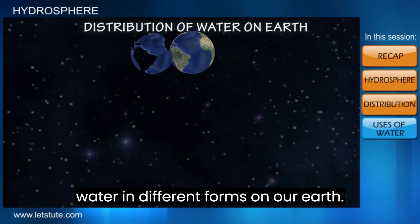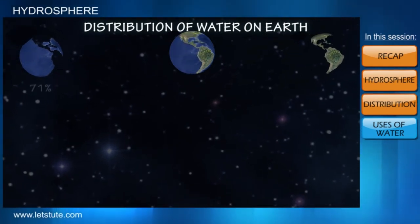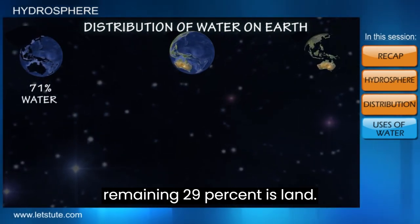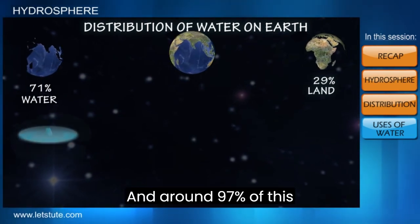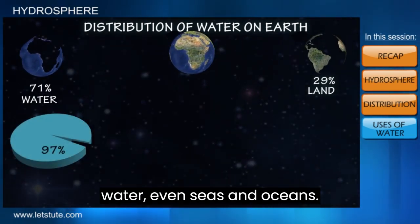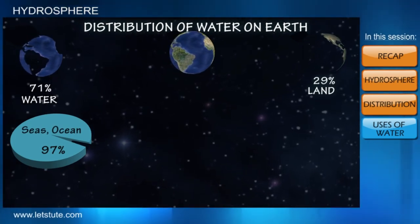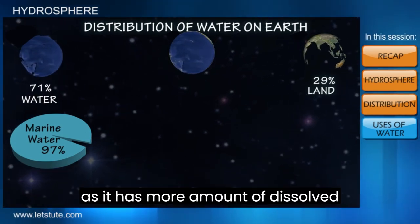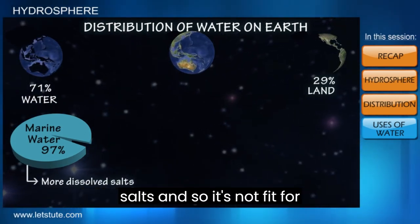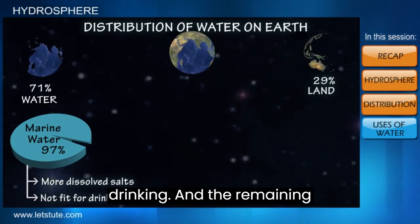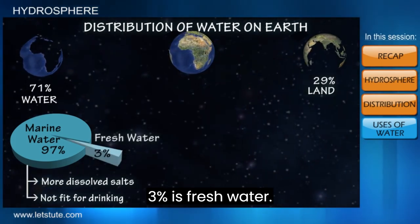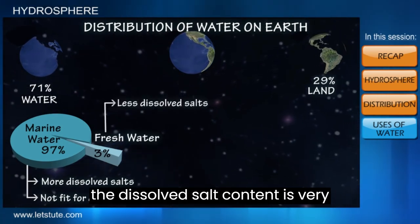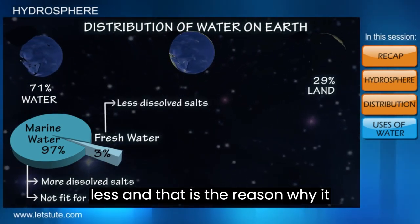If we look at the distribution of water on our Earth, 71% of our Earth is covered with water and the remaining 29% is land. Around 97% of this water is in seas and oceans. We call this marine water or saline water, as it has a greater amount of dissolved salts and so is not fit for drinking. The remaining 3% is fresh water, which has very little dissolved salt content, making it fit for drinking.